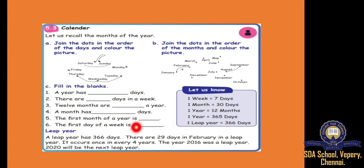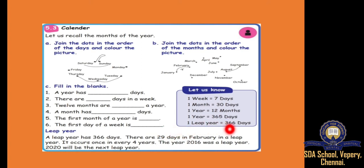And what is leap year? Leap year is when the February month will have 29 days once in 4 years. Every time we will have 28 days in February month, but in leap year we will have 29 days. So, in leap year we will have 366 days in total. You all learnt this one.